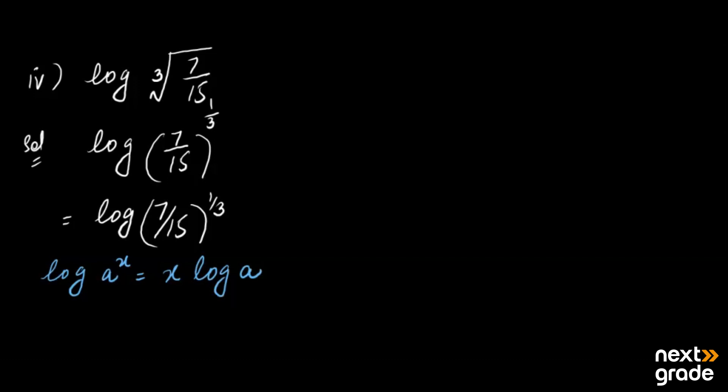Then we can see 1 by 3 in front, and log of 7 by 15 as it is. Now 1 by 3 stays as it is here, and log of 7 by 15 becomes log of 7 minus log of 15.